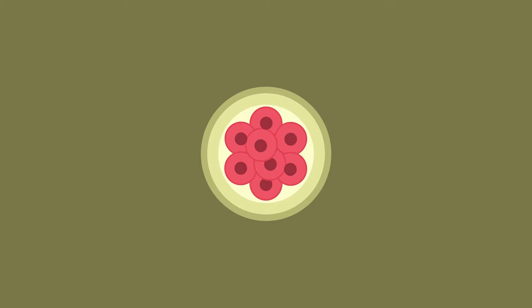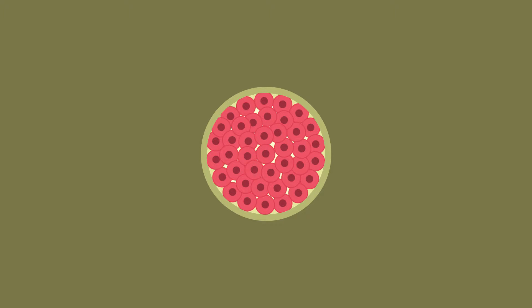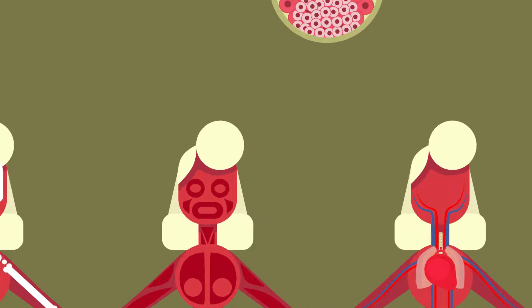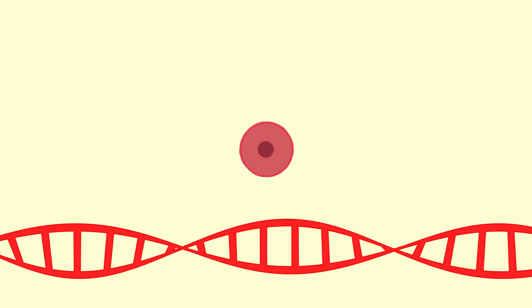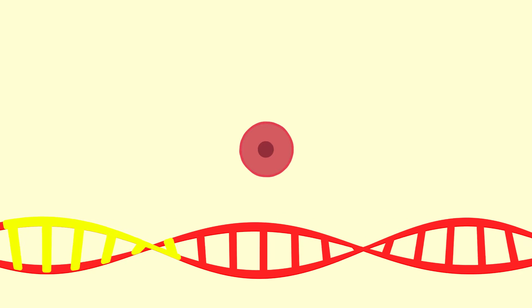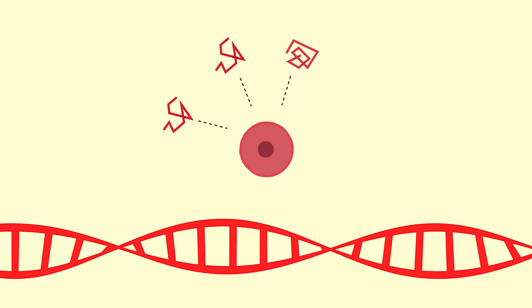When you are about eight cells big, the process of differentiation started. The embryonic stem cells began to specialise to form different types of cells, which form different tissues and organs. Differentiation happens because genes in the DNA are switched on or off and the cells start making different proteins.